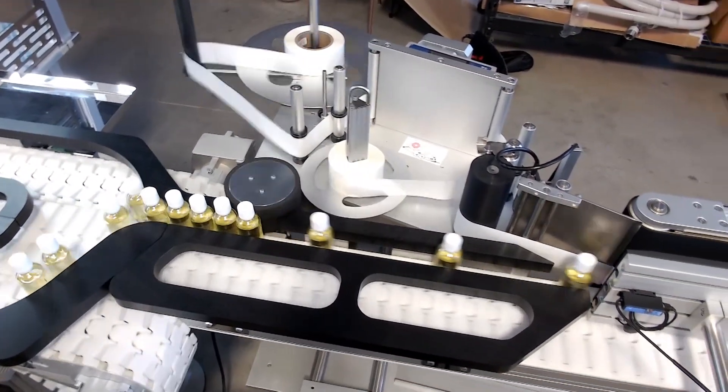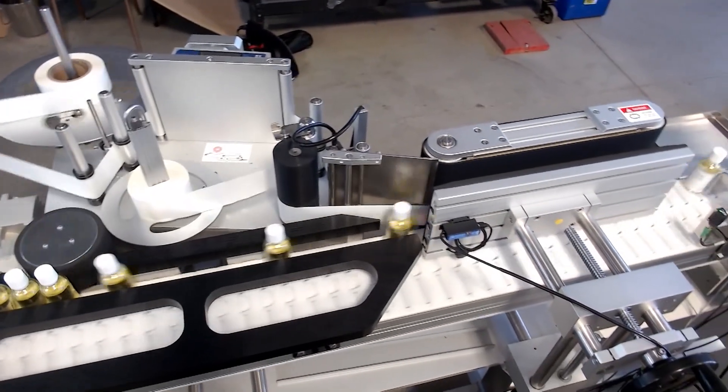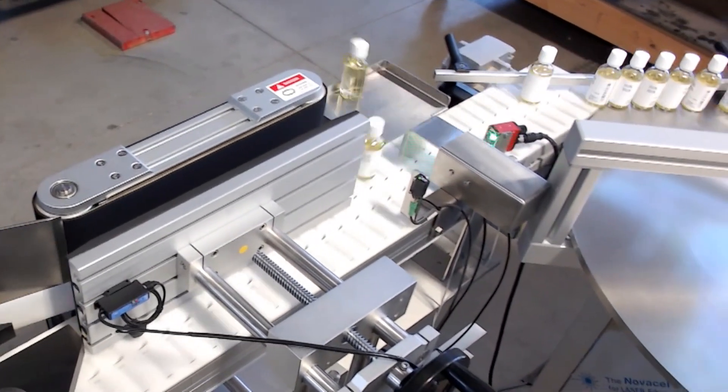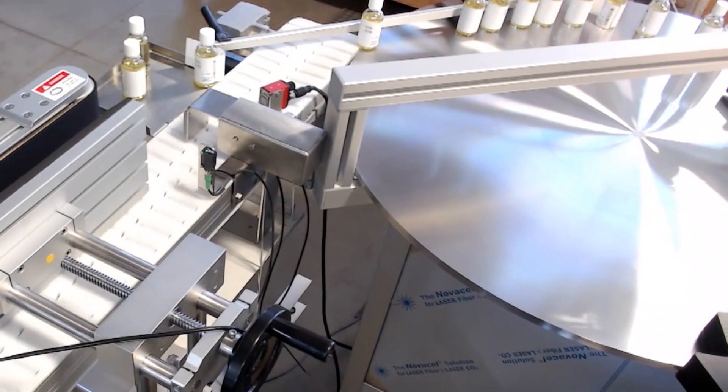This third section is for labeling and machine vision inspection. You can see the bottles go through, get labeled, and then the Omron Microscan camera will approve or reject the quality of the labels and also do a barcode scan.